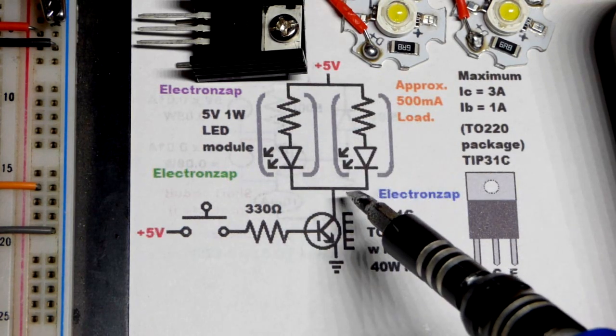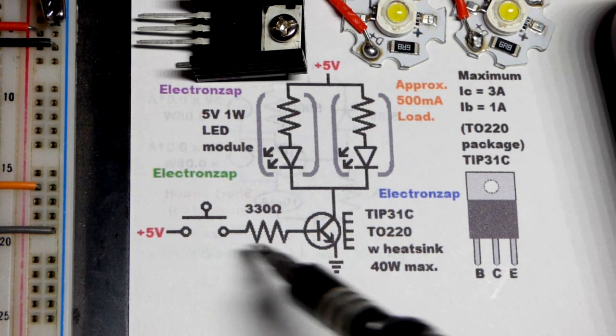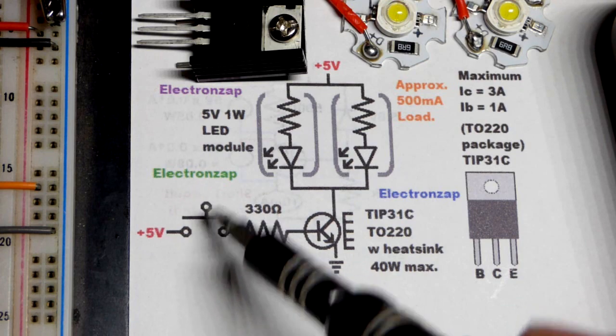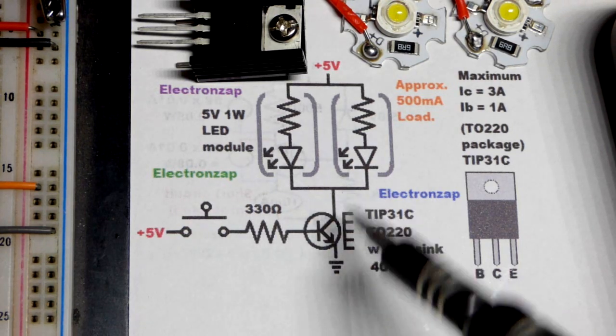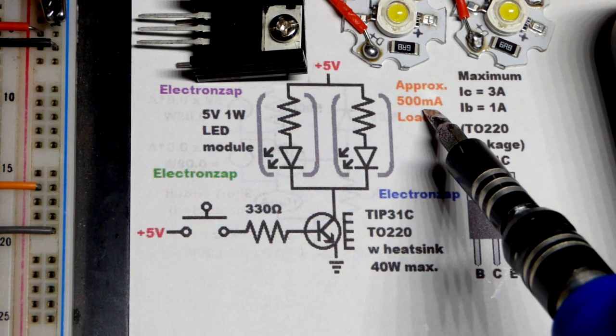We're going to put them in parallel and we're going to switch them with a transistor. We're going to control the switch with a mechanical switch. We could just use a mechanical switch directly, but we're going to get about 500 milliamps of current.